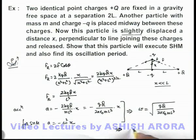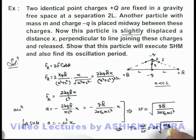This implies the time period of oscillation can be written as T = 2π/ω, which is 2π√(2πε₀mL³/Qq). That will be the answer to this problem.